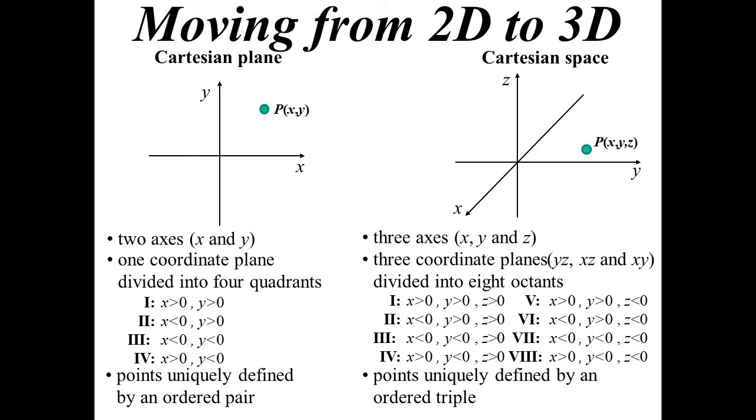A point is uniquely defined now, but not by an ordered pair - it's now an ordered triple. So we need three numbers to define a point.